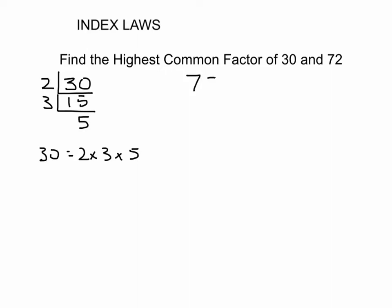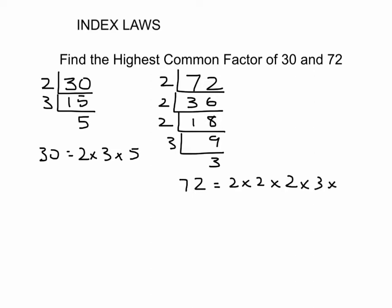And if you do the same thing with 72, 2 fits into 72 thirty-six times. Then you can go 2 again, which gives you 18. We go 2 again, that gives you 9. Then you go 3 this time, so that gives you 3. So 72 is 2 times 2 times 2 times 3 times 3.